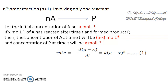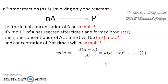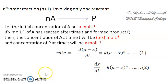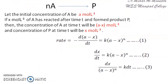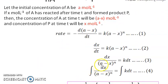The rate expression can be written as: rate = −d(A−X)/dt = K(A−X)^N, where N is the order of the reaction. We can also write it in terms of the product as dX/dt = K(A−X)^N. Rearranging this equation, we get dX / (A−X)^N = K dt, which is equation 3.